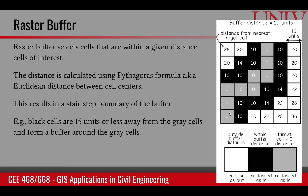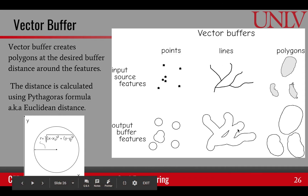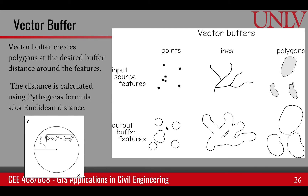Similarly, we can apply the distance function on vector data. For raster, because of the pixels, we get a stair-step shape of the buffer area. But in vector, whether it's a point, line, or polygon type feature, we always get a polygon as the output of the buffering operation. It is based upon the same distance formula, creating a polygon at a fixed distance from the point, line, or polygon.